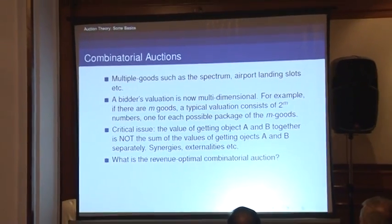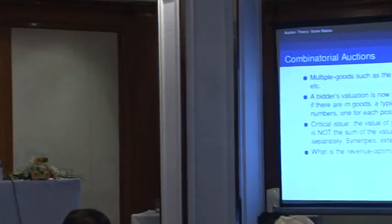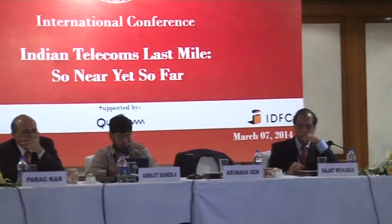So what is the revenue-optimal combinatorial auction? The answer is: we don't know, and anyone who solves it will get a Nobel Prize for sure. We don't even know it for two objects — it's a very hard problem and perhaps doesn't even have a nice solution. Selling each good independently may not serve the interest of either efficiency or revenue, because it induces very complicated strategic behavior — how you want to bid for one object depends on what you think will happen in subsequent rounds.